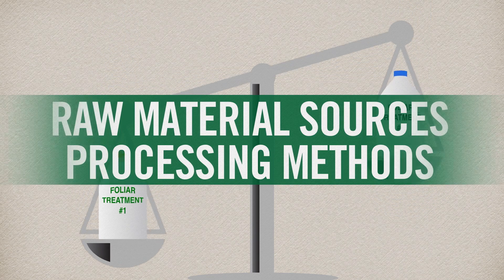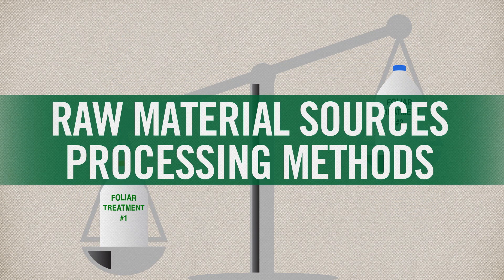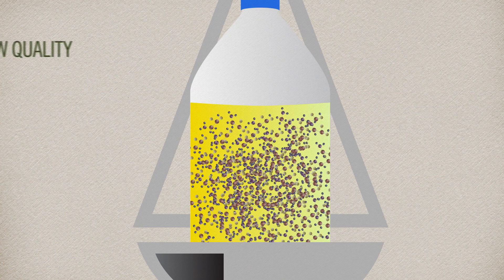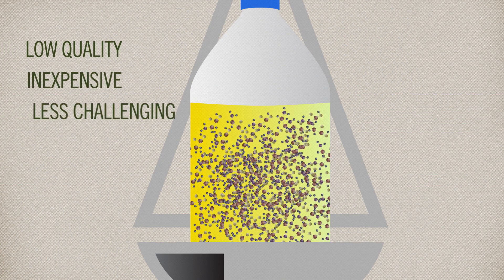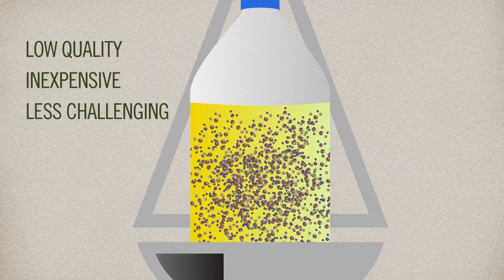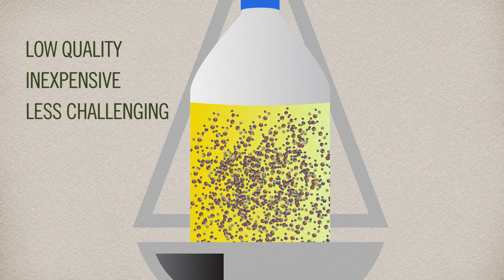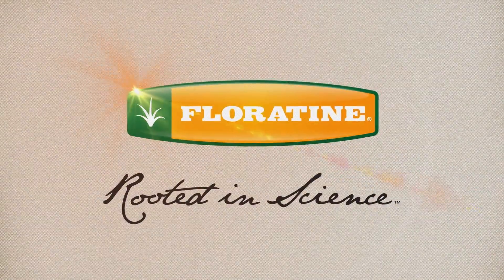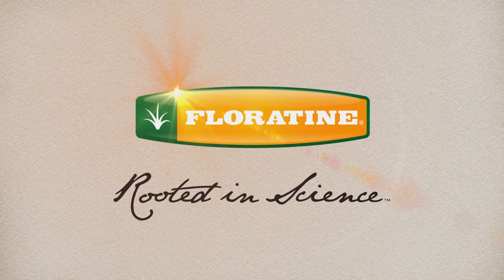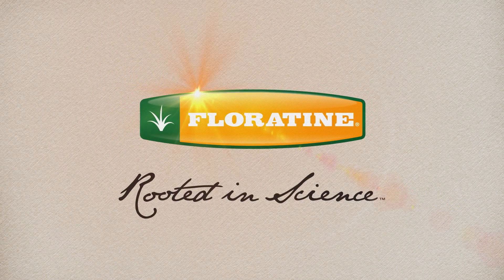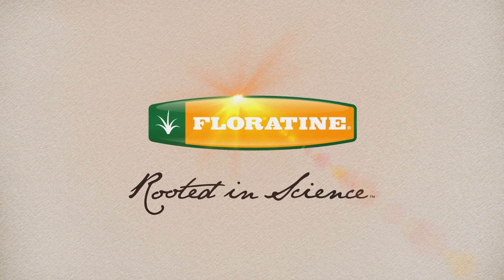Not all amino acid foliar treatments are created equal, however. Raw material sources and processing methods play a big role in determining the quality and types of amino acids contained, as well as their bioavailability. Many low-quality amino acid supplements contain inexpensive and less challenging-to-produce aminos — often the ones that a plant doesn't need help producing on its own. Floratine foliars use only high-quality ingredients and an intensive, rigorous manufacturing process to provide the most critical and challenging-to-produce aminos plants need for survival in times of stress.